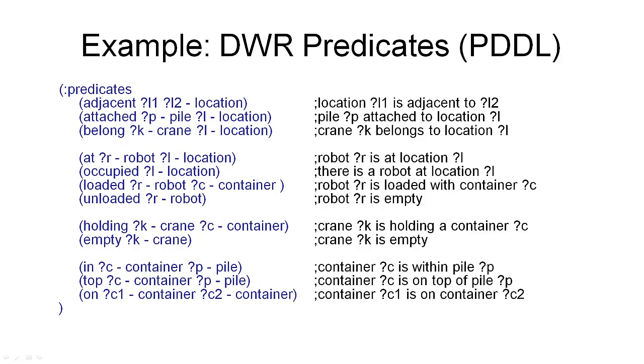The STRIPS representation is based on the idea that in a world state we have objects that are somehow related to each other. That means we need to define some relations that we can use to relate the objects to each other.